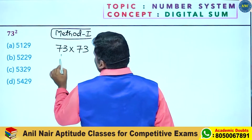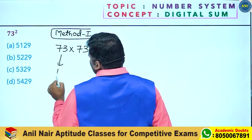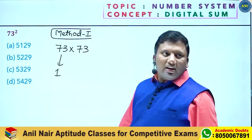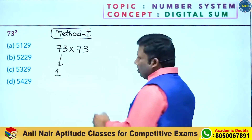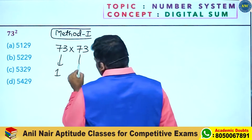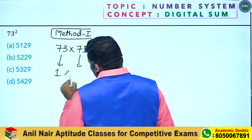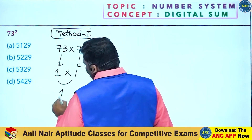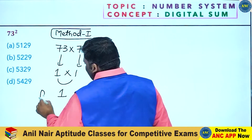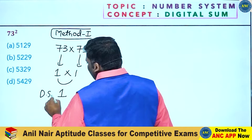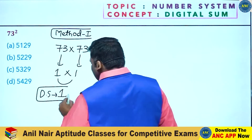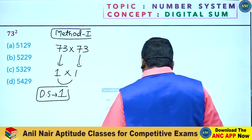73 digital sum is 7 plus 3 equals 10, which reduces to 1. So 7 plus 3 is 10, giving digital sum 1. The question's digital sum is 1.